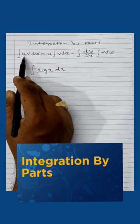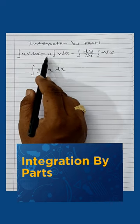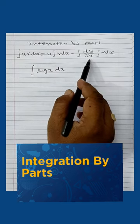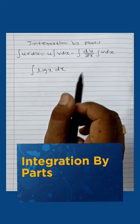This formula you have to remember: Integration of u v dx equals u multiplied by integration of v dx minus integration of du/dx multiplied by integration of v dx.